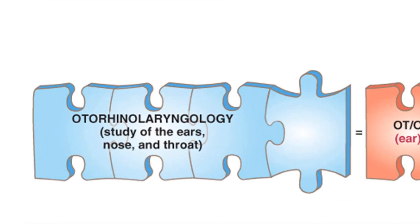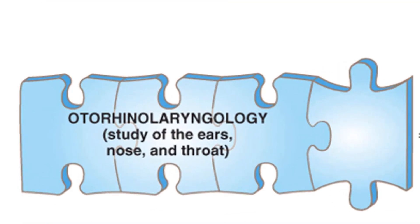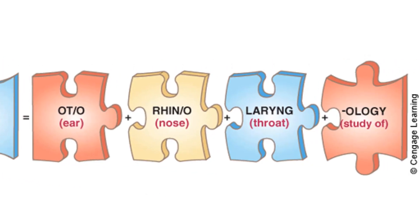We have this medical term which is called otorhinolaryngology, which means study of ears, nose, and throat. If we split it into its components, ot means ear, rhin means nose, larynx means throat. These are roots.